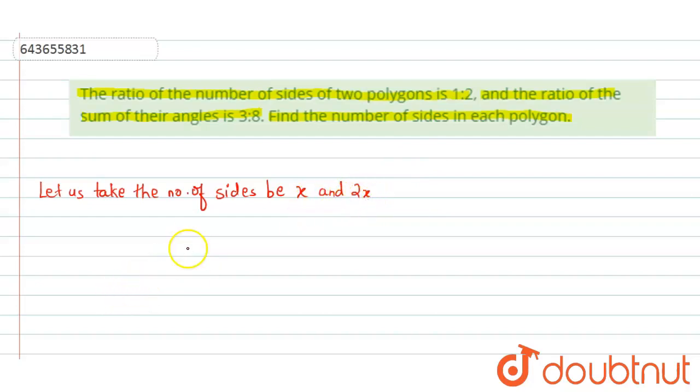Now it is also given that the ratio of the sum of their angles is 3:8. If we have n sides, we can write the sum of all the angles by using this formula: (n-2) × 180 degrees. Using this formula, we can write the sum of all the interior angles.